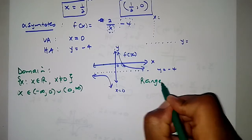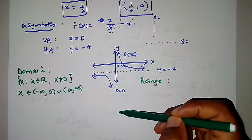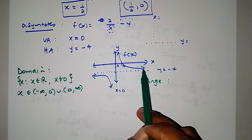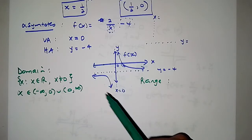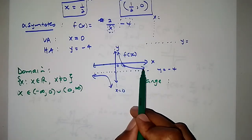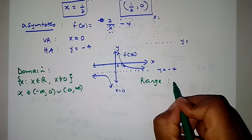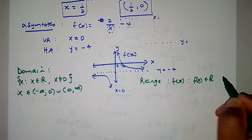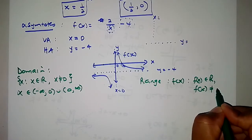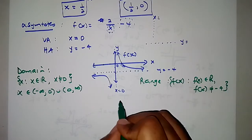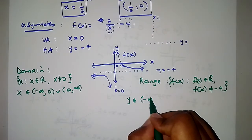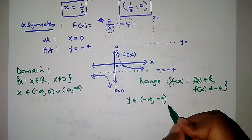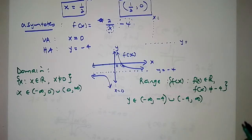The range of the function: the function is defined from negative infinity going up until the horizontal asymptote at y equals negative 4, but it does not touch that line. So f of x is an element of real numbers, but f of x cannot equal negative 4. You can write the range as y from negative infinity to negative 4 — not including negative 4 — and then from negative 4 to positive infinity, using round brackets to exclude the asymptote value.